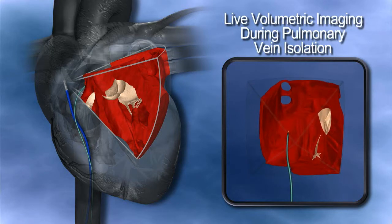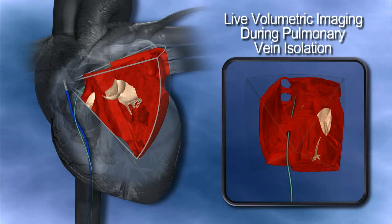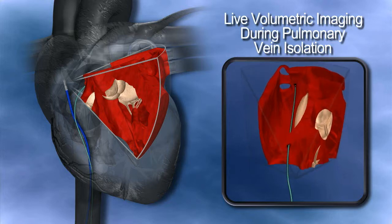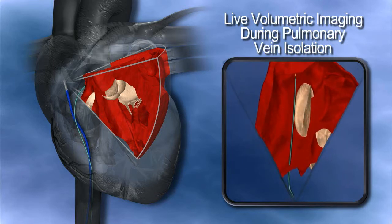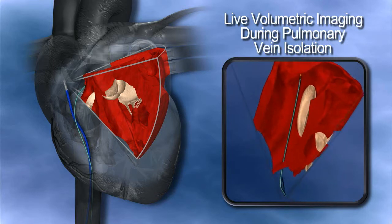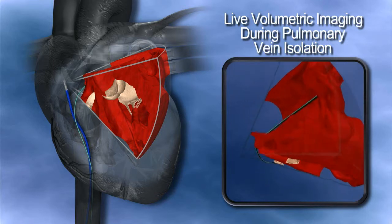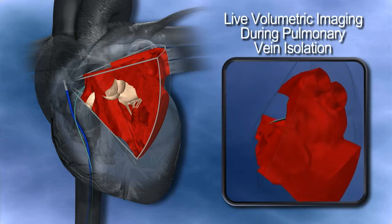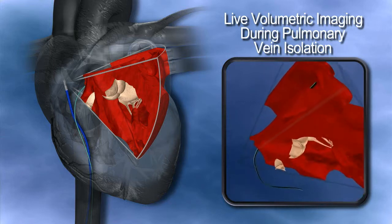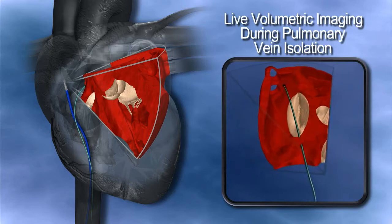Currently, physicians do not have imaging of the soft tissue that they're ablating, nor adequate imaging of where the ablation catheter is with respect to where they're trying to ablate into the tissue. This volume view can give them a real-time image of where the cardiac catheter tip is in relation to the objects they're trying to ablate — in this case, the pulmonary veins.